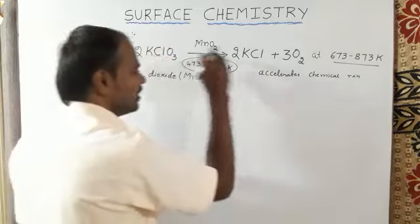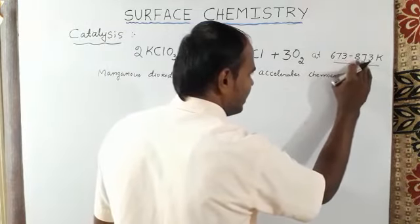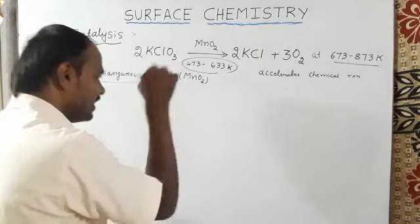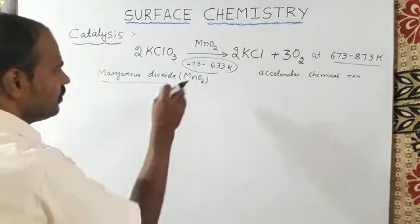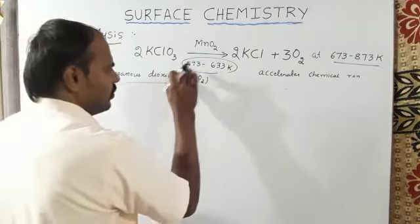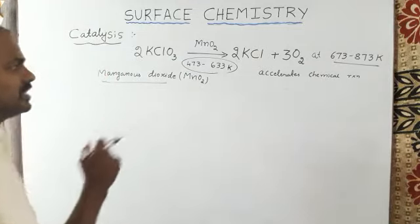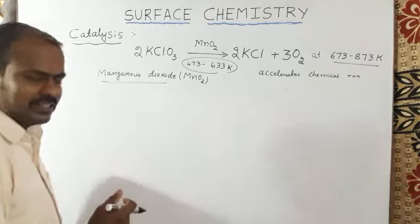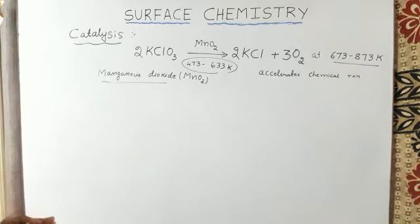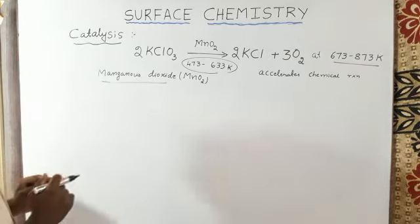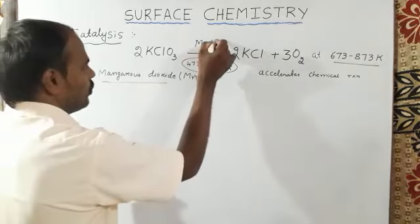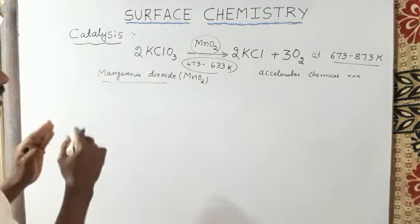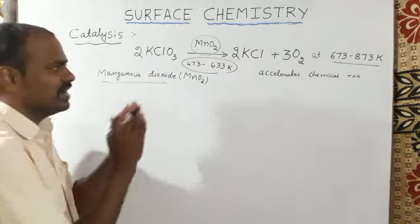In the absence of catalyst, which requires 673 to 873 Kelvin temperature, but in the presence of manganese dioxide, which requires only 473 to 633 Kelvin, and also accelerates the chemical reaction. MnO2 accelerates the rate of the reaction.